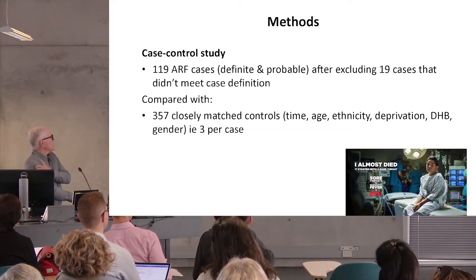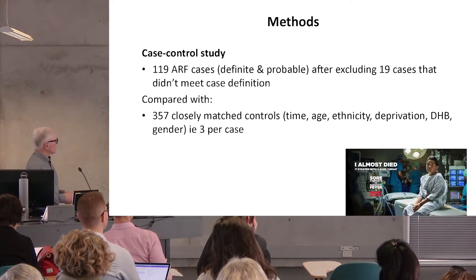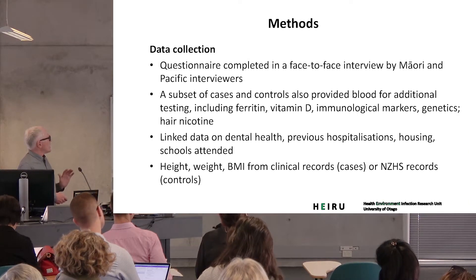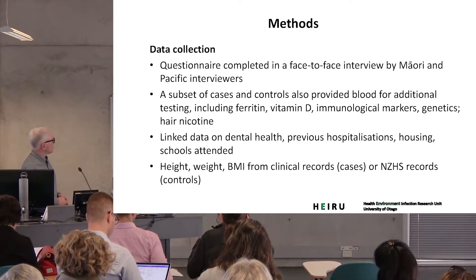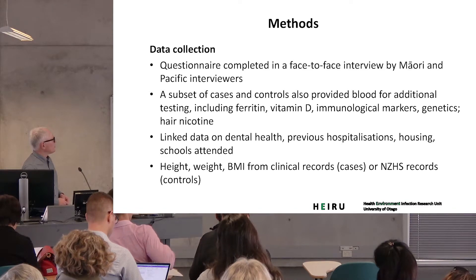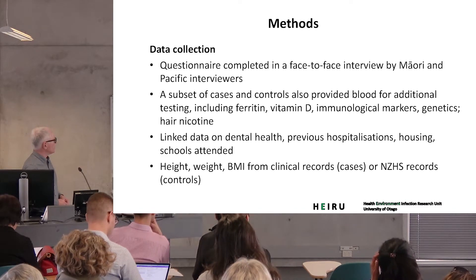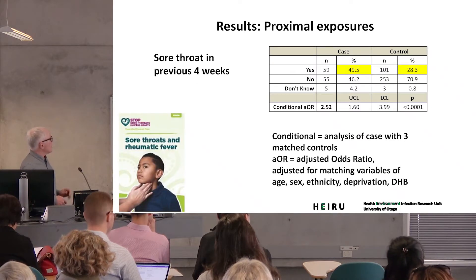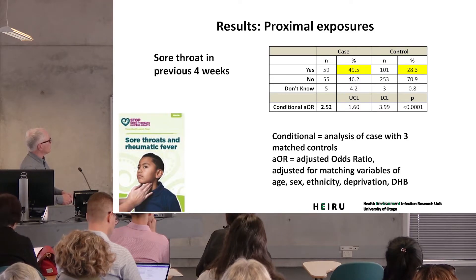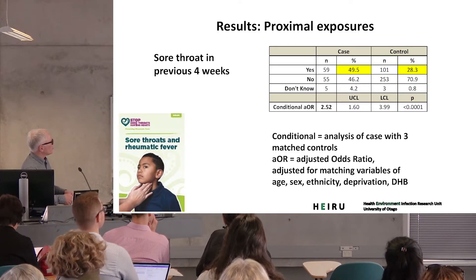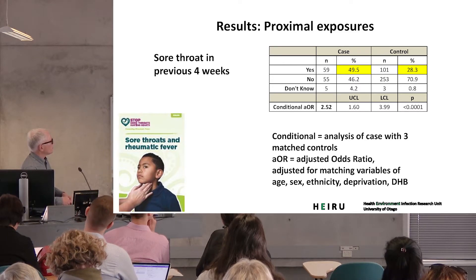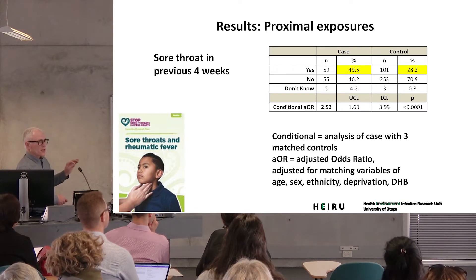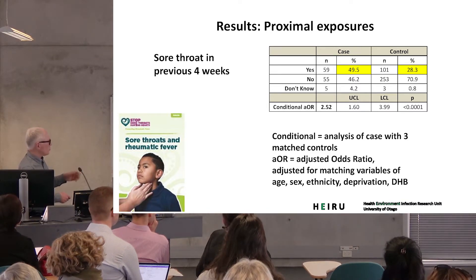The study had approximately 120 cases and three matched controls for each case. Most data was gathered by face-to-face questionnaire with some biological specimens collected, and we were also able to link a huge amount of administrative data. Looking at risk factors, I'm presenting these by showing the prevalence of each exposure in cases and controls, and the conditional adjusted odds ratio adjusted for all matching variables, comparing each case with its three matched controls.